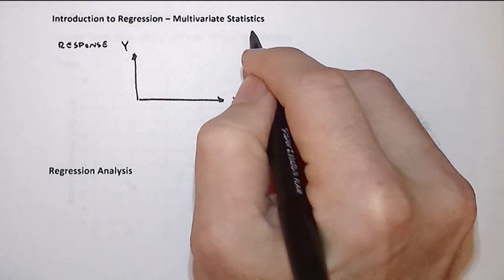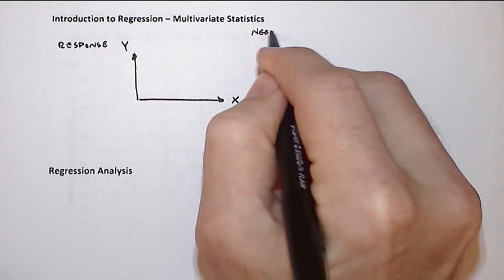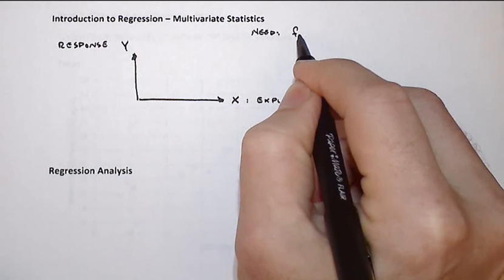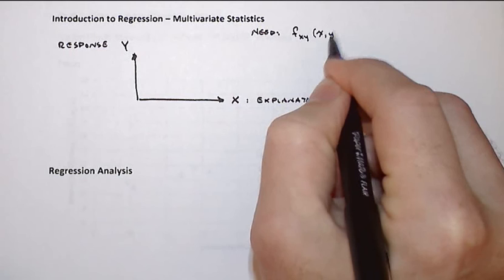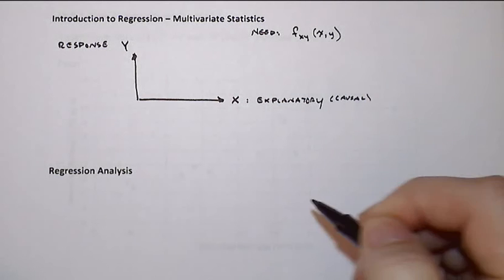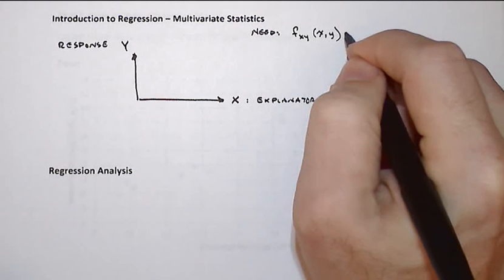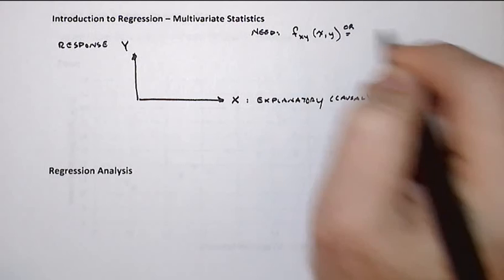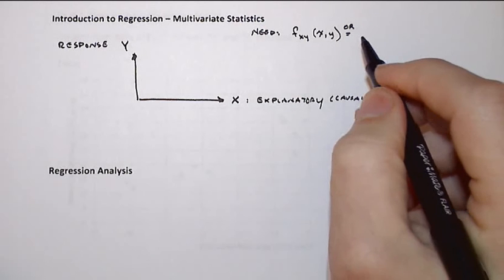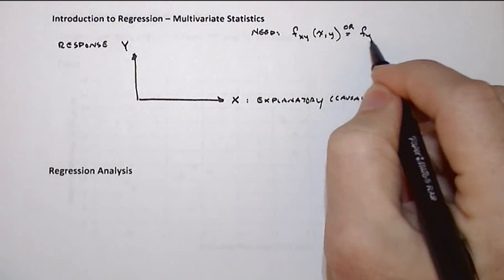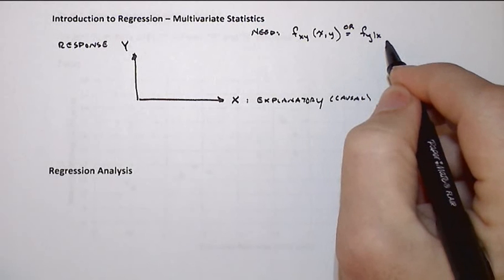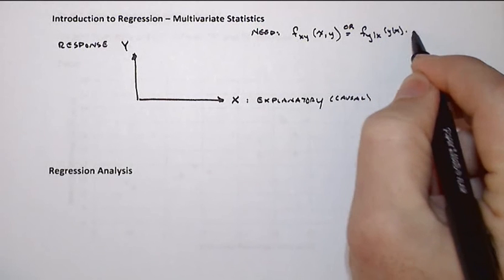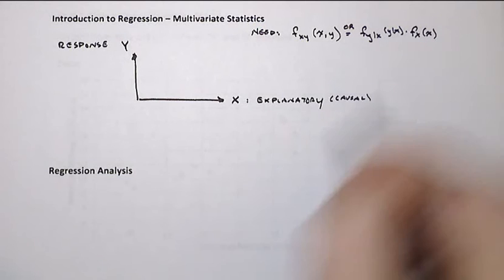Now, from a big picture standpoint of probability, what we really want between these two is the joint density function. That's usually not an easy thing to gather or estimate, so what we oftentimes do is get the conditional distribution of our response variable and then multiply by our marginal distribution.